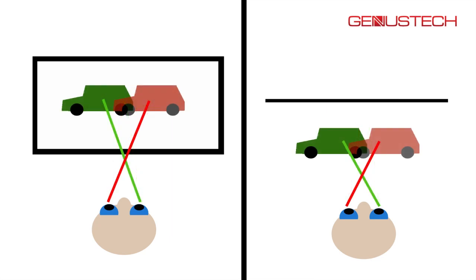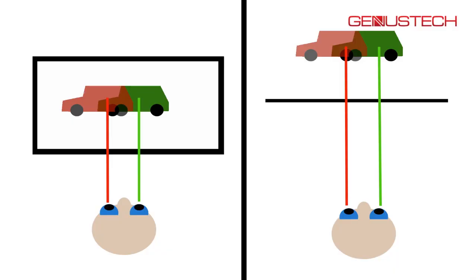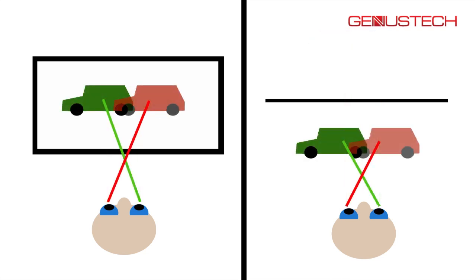The left view of the car is actually on the right-hand side of the screen, and the right view of the car is actually on the left side of the screen. This forces the viewer's eyes to actually cross over. So when we want things to appear in the background, we're mimicking parallel vision, and when we want things in the foreground, we're mimicking converged or crossing-over eyes.